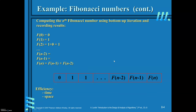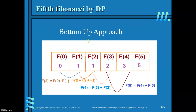You can avoid solving sub-instances more than once. To find the fifth Fibonacci number using dynamic programming: first record F(0) and F(1). Then F(2) = F(1) + F(0) = 1. Then F(3) = F(2) + F(1) = 2. Then F(4) = 2 + 1 = 3. Finally F(5) = 3 + 2 = 5. This is the dynamic programming approach.